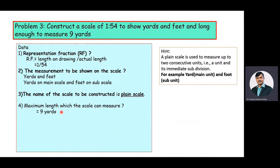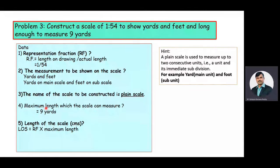We need to calculate the length of the scale. Length of the scale is equal to RF multiplied by maximum length. Here, RF is equal to 1 by 54 and maximum length is equal to 9 yards. These 9 yards are to be converted in terms of feet, feet to be converted in terms of inches, and inches are to be converted in terms of centimeters.